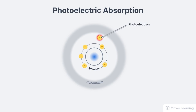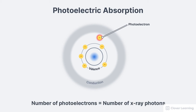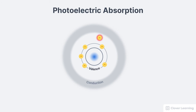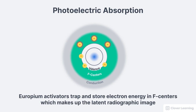During the photoelectric absorption, the number of photoelectrons produced in the phosphor layer is proportional to the number of X-ray photons that interact with it. These photoelectrons then interact with other nearby electrons within the phosphor, exciting them from a low-energy valence band to a high-energy conduction band. It is in the gap between the conduction band and the valence band that the europium activators in the imaging plate act as electron traps, known as F-centers. They trap and store the high-energy electrons, and it is this stored energy that houses the information that makes up the latent radiographic image.